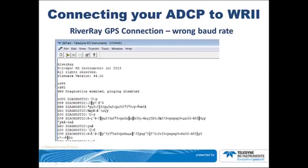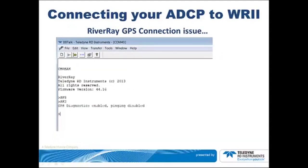In this next example, the SF2 command was turned on and diagnostics were enabled. However, the following data is all garbage — this is because of the wrong baud rate. In another example, the SF2 command was used and diagnostics are enabled, but there is no data. This can be because the GPS is not turned on, is not outputting messages for some reason, there is a connection issue between the GPS and the wiring harness in the float, or the wiring harness in the float is incorrect.